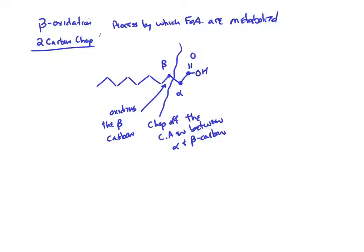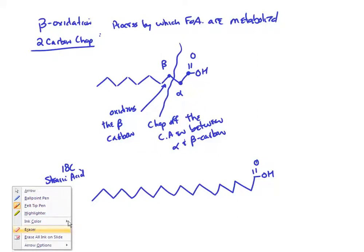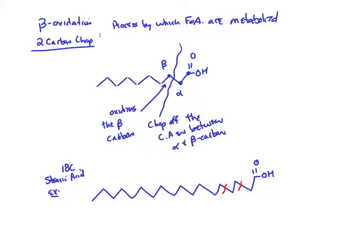Once you oxidize that beta carbon, you can do this process over and over again, taking a long-chain fatty acid and chopping it apart many times. For example, if we take stearic acid — 18 carbons — and start breaking it apart into two-carbon chunks, we can do eight cycles of beta-oxidation. That leads to nine acetyl-CoA molecules.